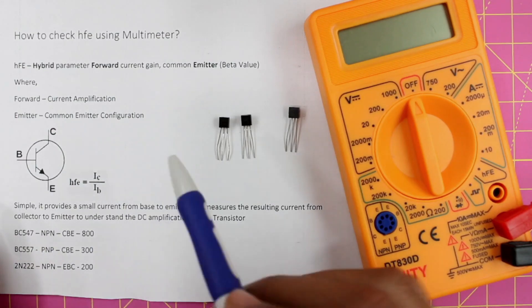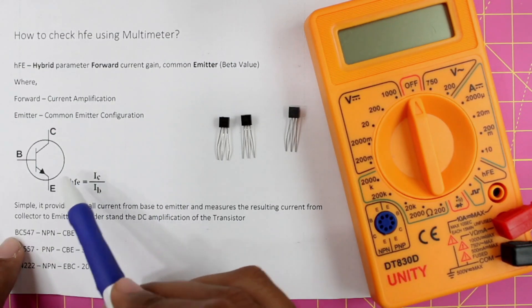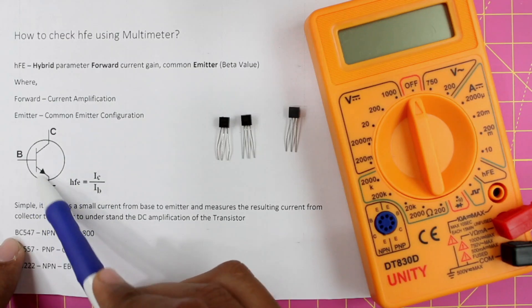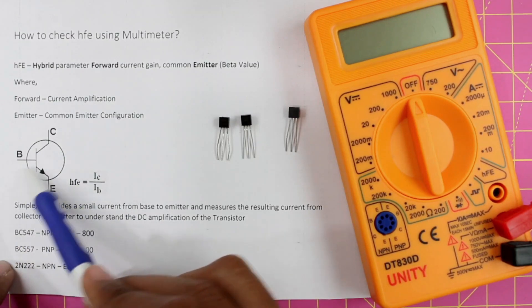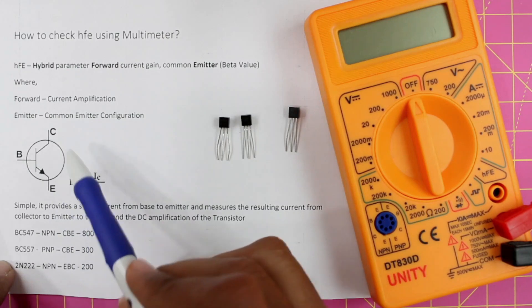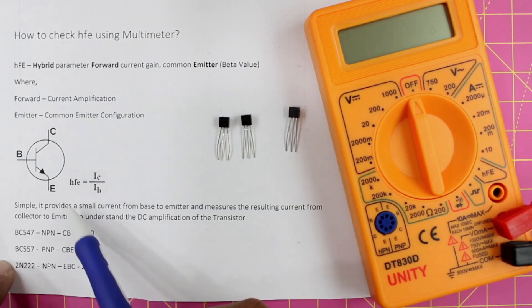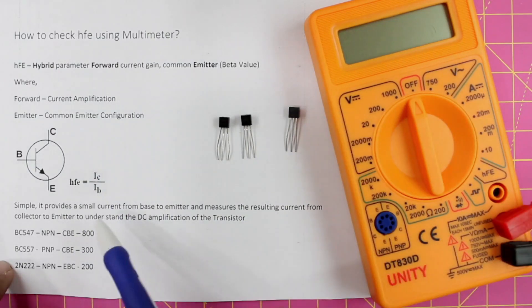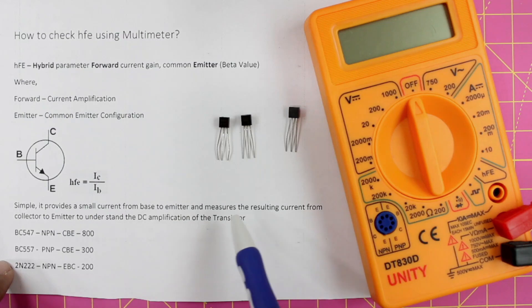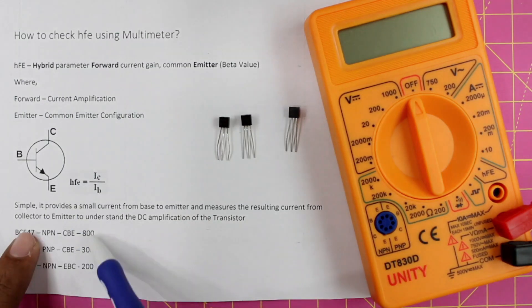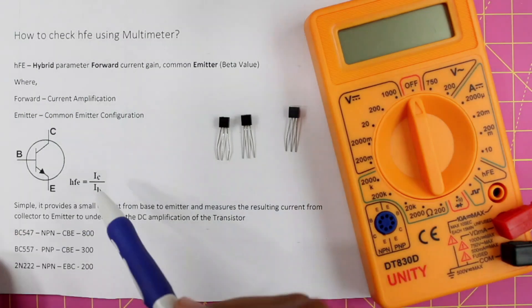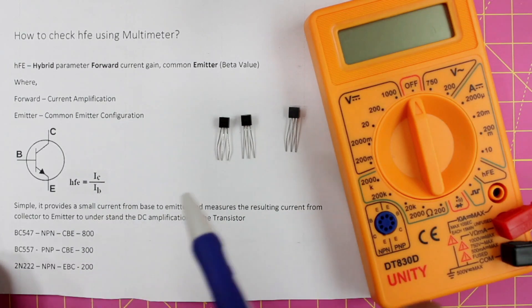We are going to measure the resulting amplification current from the collector of the transistor to the emitter. So what happens is the multimeter provides a small current from the base to the emitter and measures the resulting current from the collector to the emitter. This way we can measure the DC amplification capacity of your transistor, otherwise the beta value.